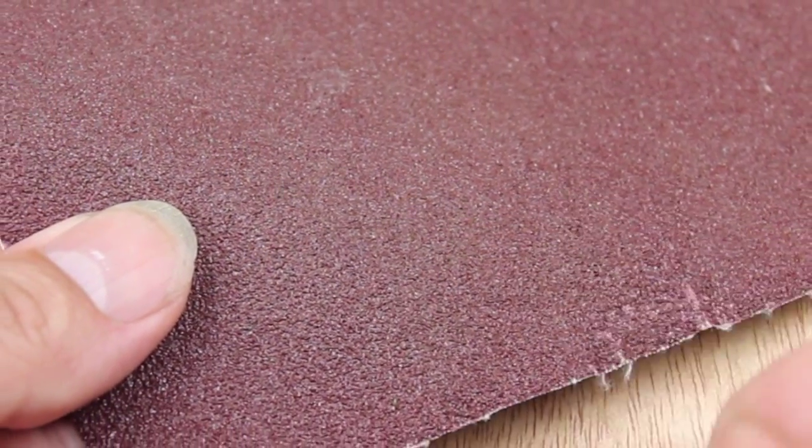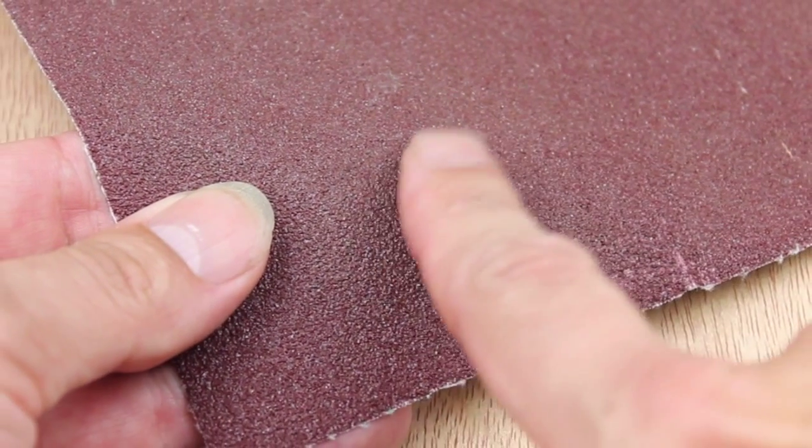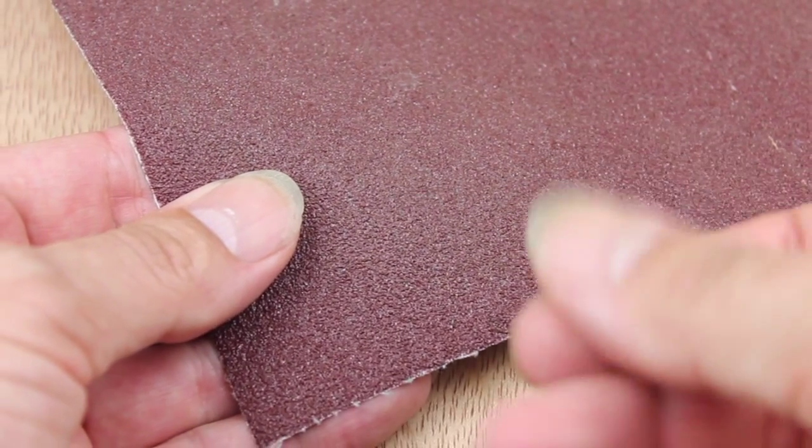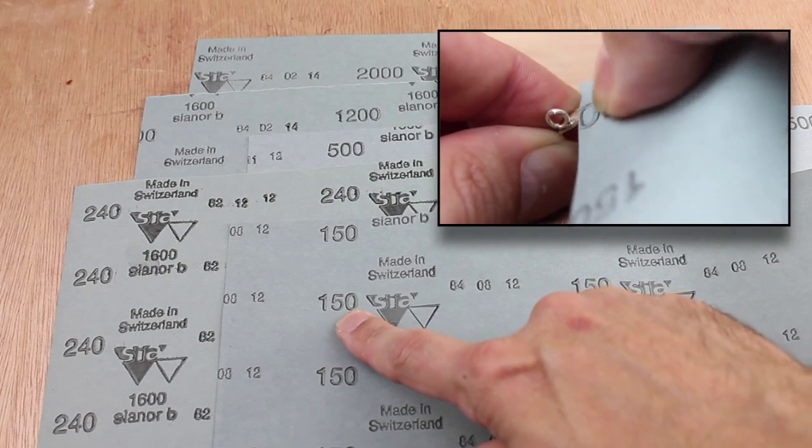But these tend to be a bit coarse for jewelry - these are more for industrial uses. For jewelry, we tend to use finer grades that are up in the hundreds. So here, for example, the roughest one I've got is a 150 grit.